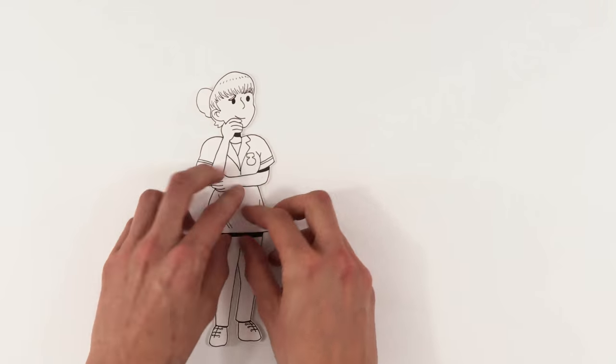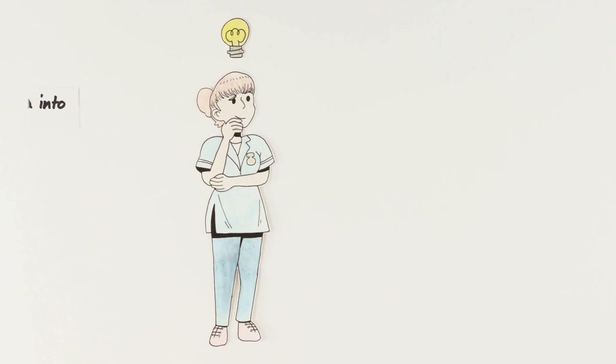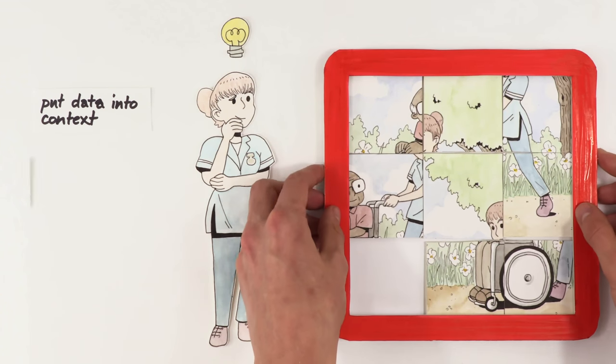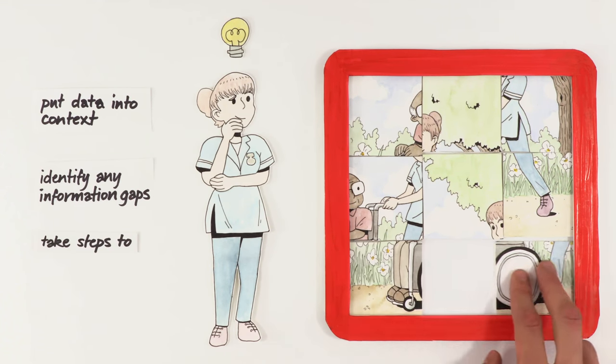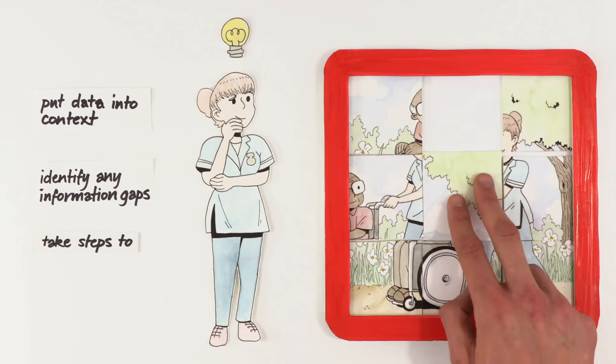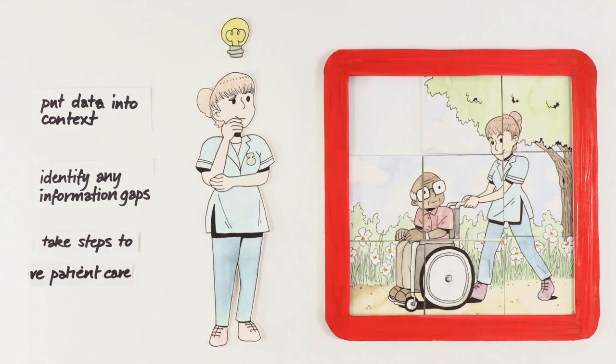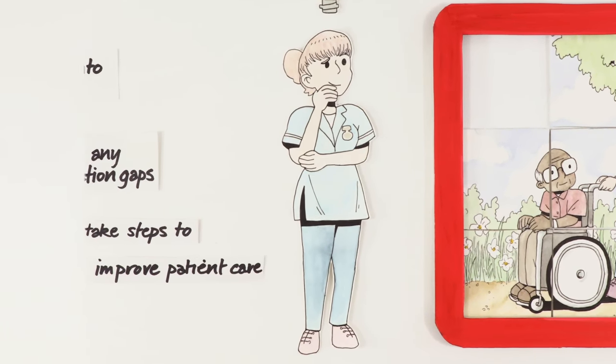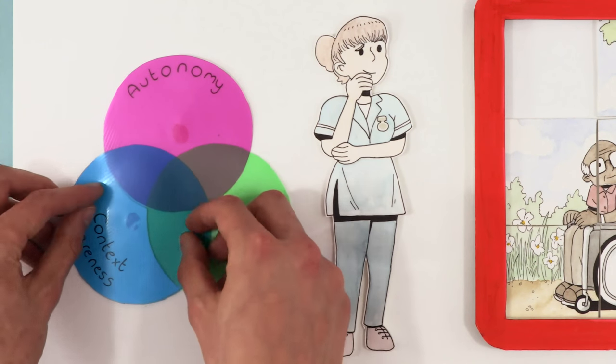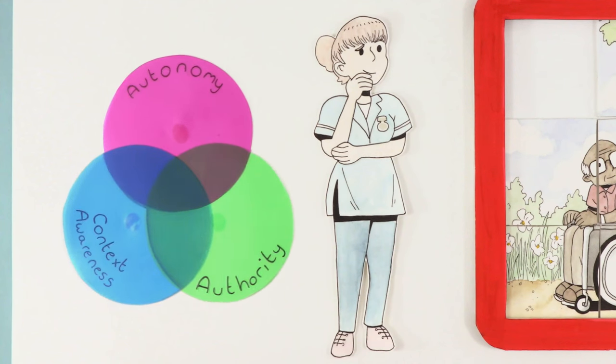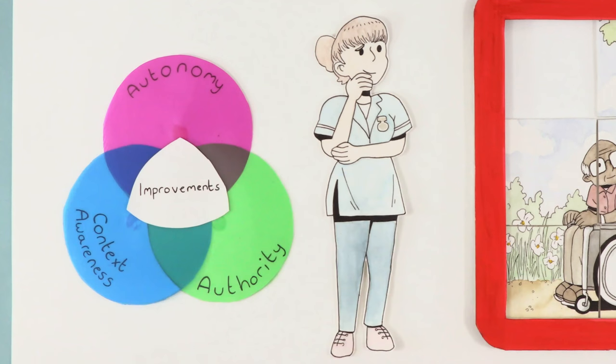These knowledgeable staff members are able to put the data into context, identify any information gaps, and in some cases take steps to find the necessary information and use it to improve patient care. Everywhere that staff had the autonomy, authority and context awareness to respond and react, we saw improvements taking place.